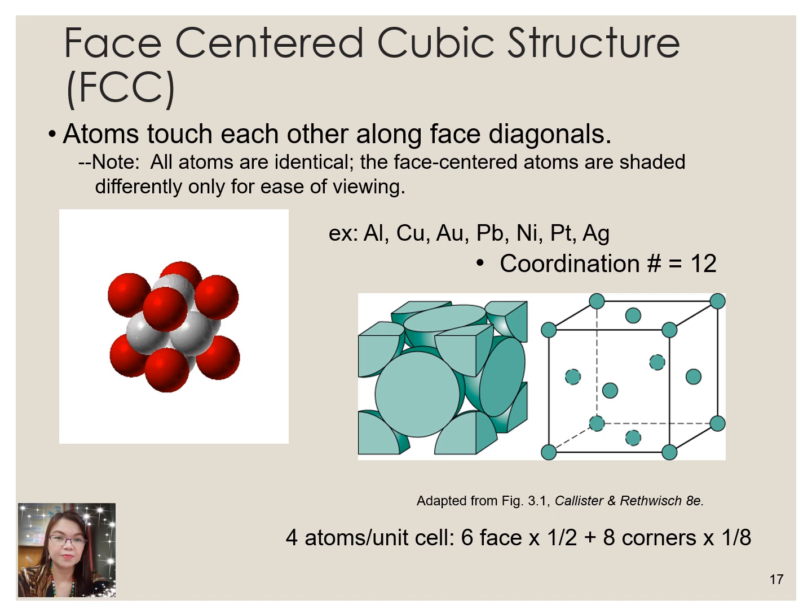Face-centered cubic refers to crystal structure consisting of an atom at each cube corner and an atom in the face of each cube face. It is close-packed plane in which on each face of the cube atoms are assumed to touch along the face diagonal. These are particular examples of having FCC, or face-centered structure: aluminum, copper, gold, lead, nickel, platinum, and silver, with coordination number of 12, meaning it has 12 nearest neighbors. Meaning 1, 2, 3, 4, 5, 6, 7, 8, 9, 10, 11, and then 12.